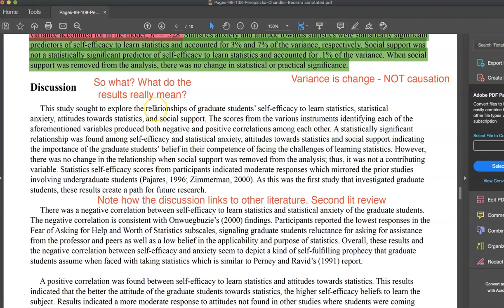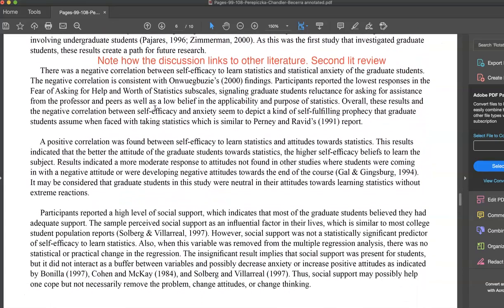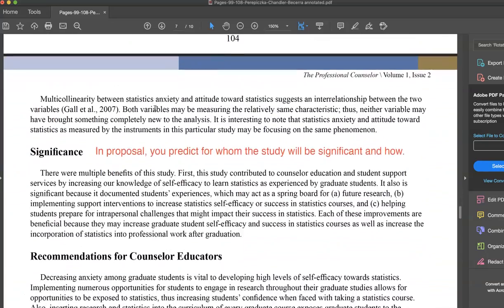And then they go into discussion. So what does it mean? Why do we care about it? They link it to the literature. Where does it align with or deviate from the existing literature? And then it goes into significance.